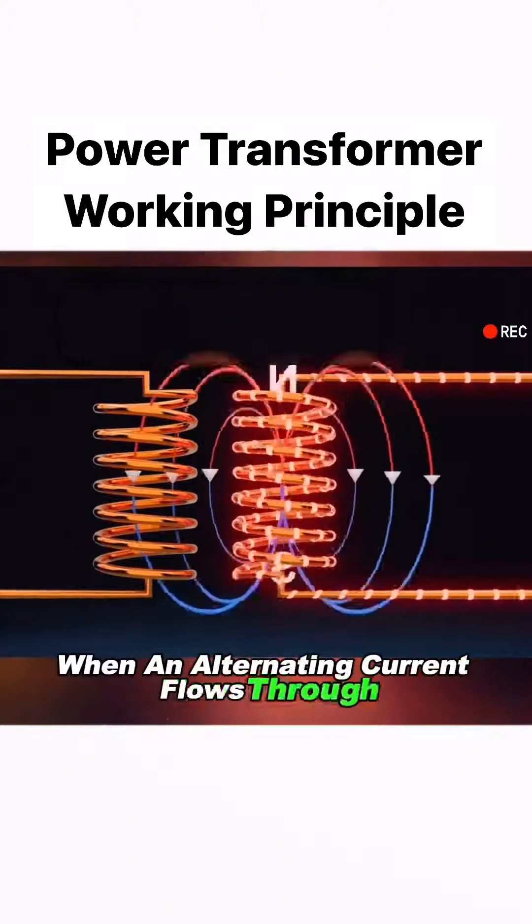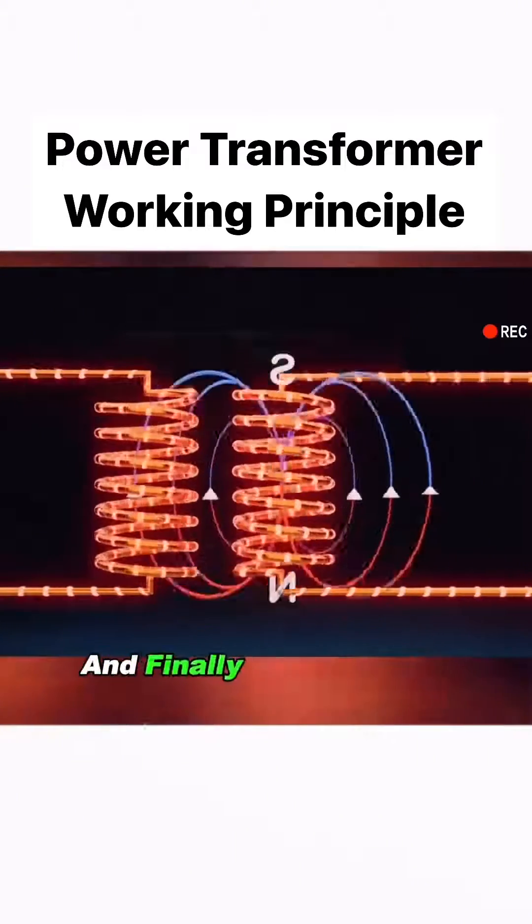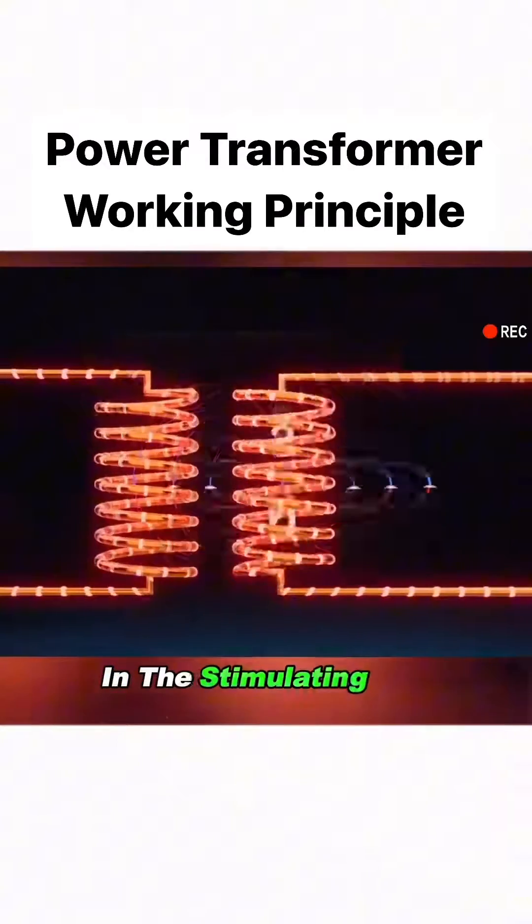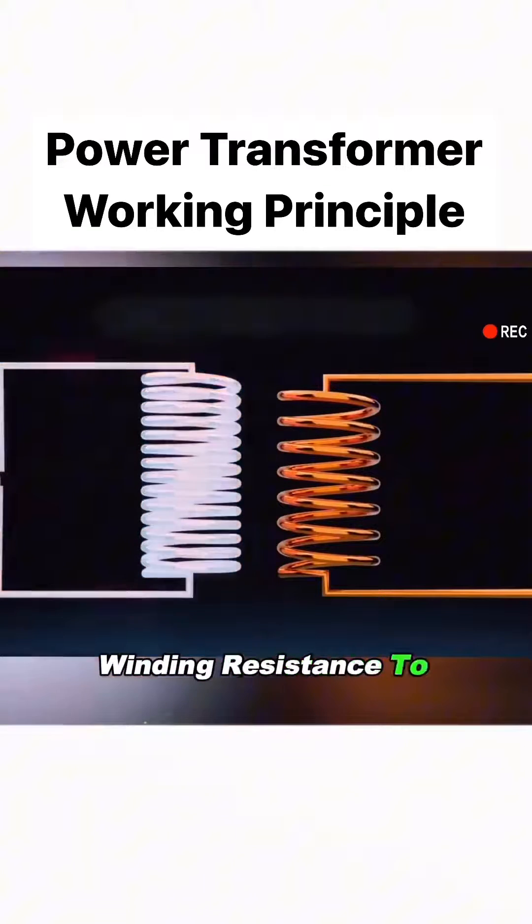When an alternating current flows through the primary coil, it creates a changing magnetic field around it, and generates an induced current in the secondary coil. We change the number of turns of the coil winding to convert the voltage.